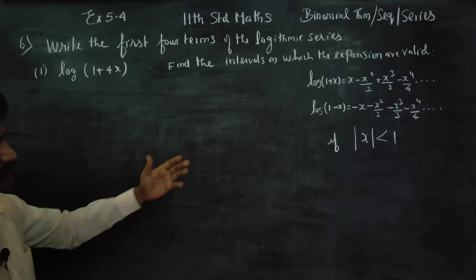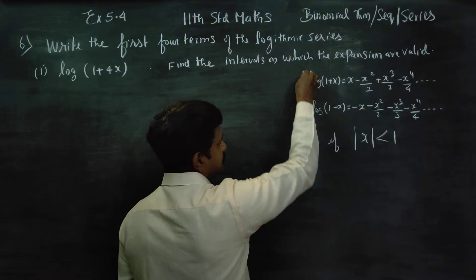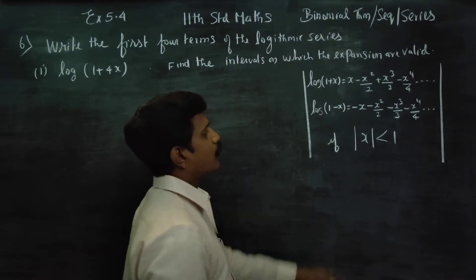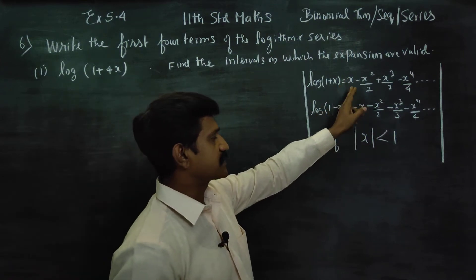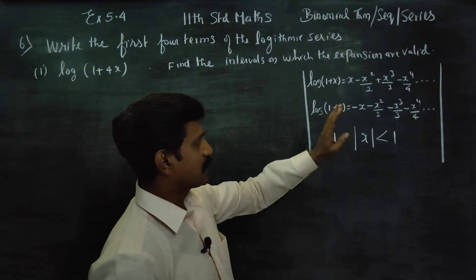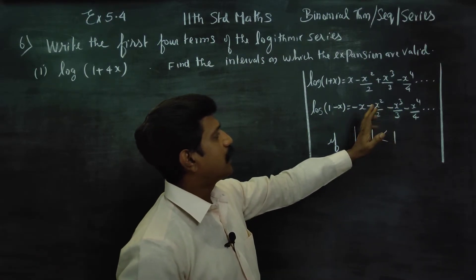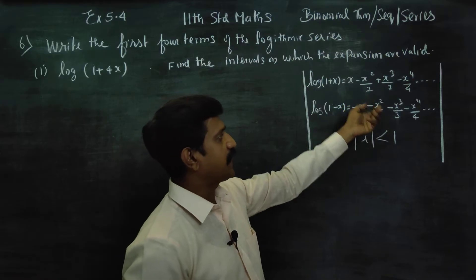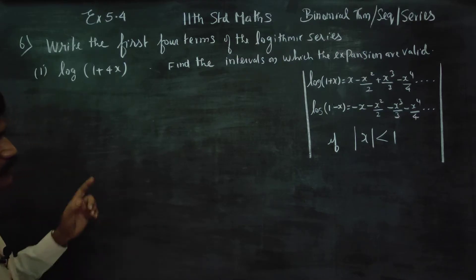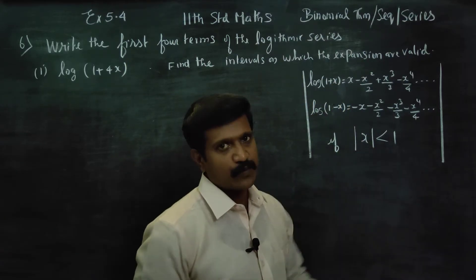The logarithmic expansion formulas are: log(1 + x) and log(1 − x). For log(1 + x), it starts with x, with positive and negative terms alternating. Unlike the exponential series, there are no factorials in the denominator — instead 2, 3, 4 and so on. The condition is that the absolute value of x must be less than 1.